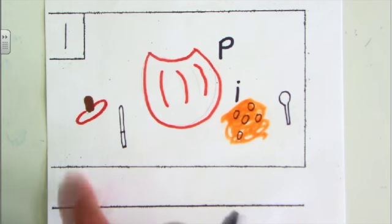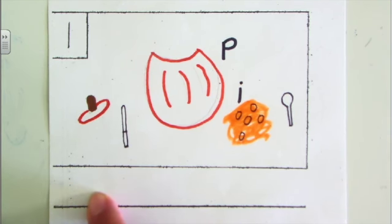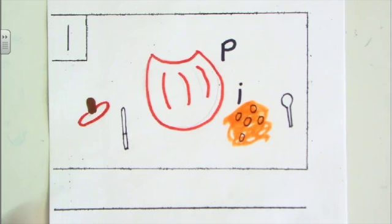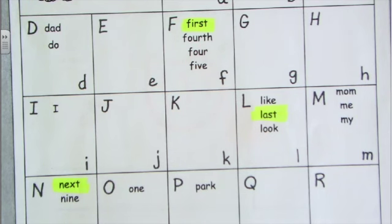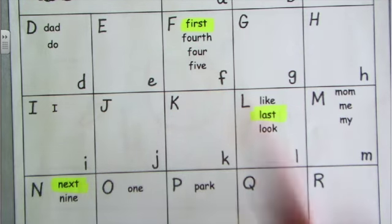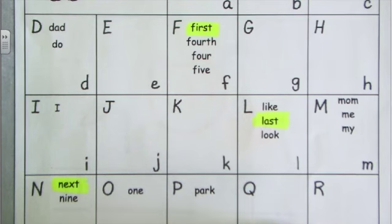But we have to use a word first. One of our sequence words. What do we use? First. Yeah. If we don't know how to spell first, that's okay. Because we each got one of these. I highlighted our sequence words. First.